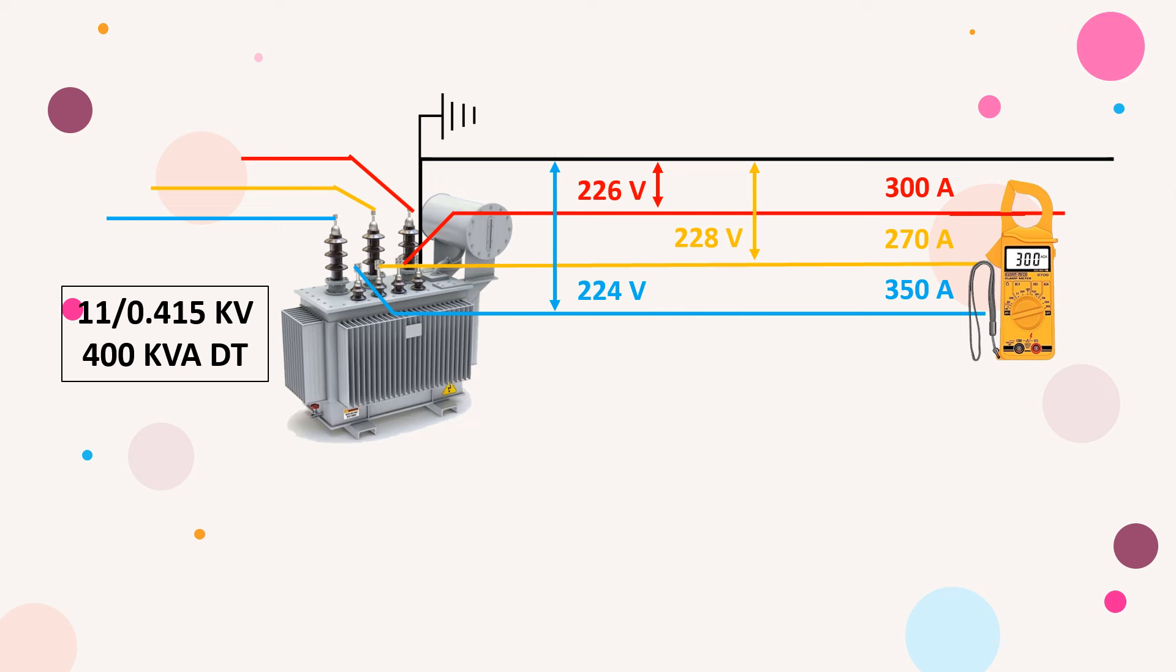The first thing we should be clear about is that to calculate the total power flowing from this transformer, the power factor value is not required at all because the ampere loading you see here is apparent load. It includes the amperes corresponding to both types of load.